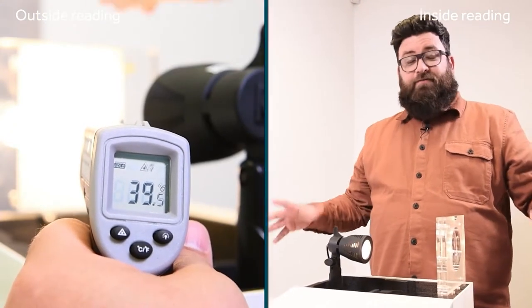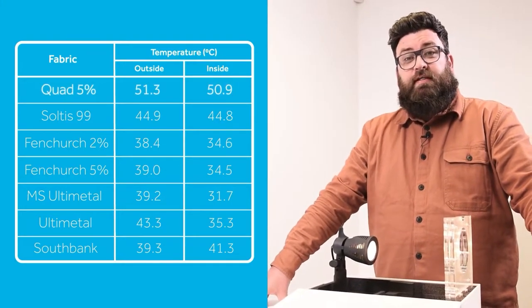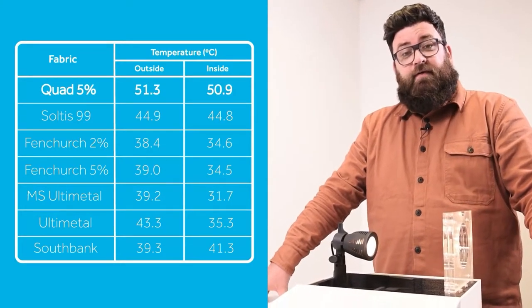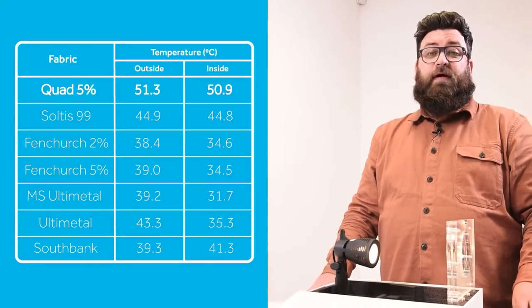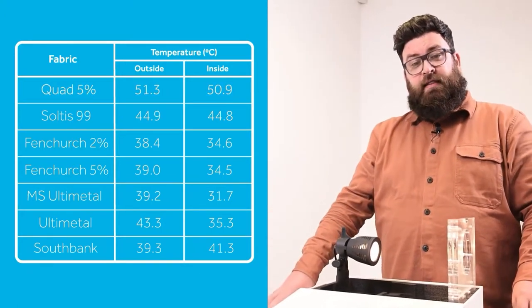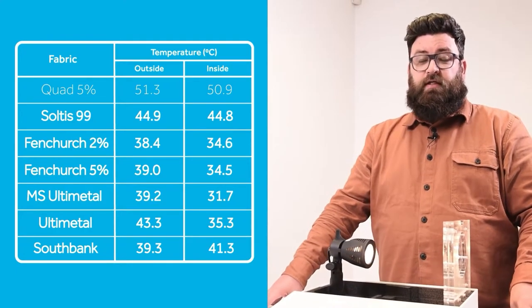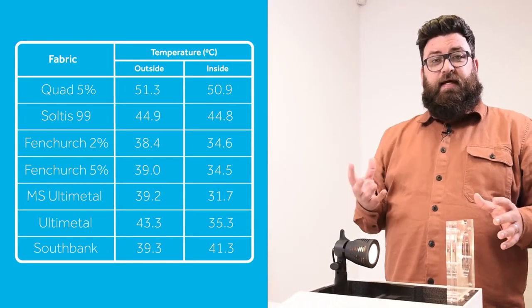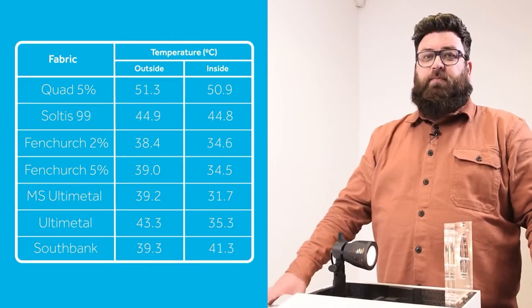So the results are back from the lab. The numbers clearly indicate that quad is coming in at 57 degrees inside and out. We use quad as a control fabric. It has no solar reflective properties, no metallic backing. And you can see the rest of the fabrics come in in the 30s and 40s. And that is stopping that heat getting in from the sun into the room and it's bouncing that straight back out.